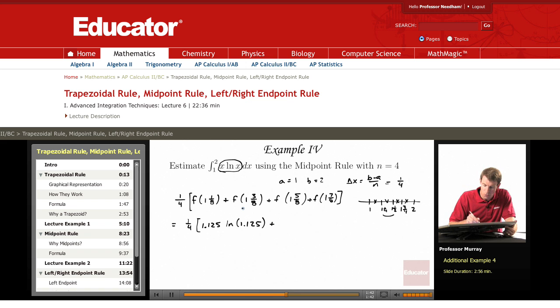And we plug each one of these values in there. I won't write them all down, but the last one here is 1 and 7/8. Plug that in and we get 1.875 times natural log of 1.875.